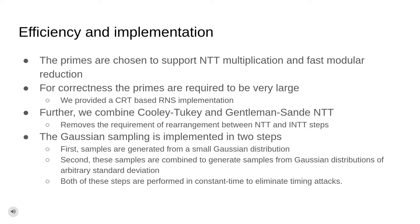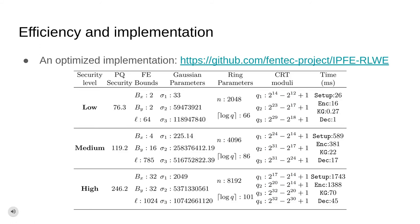To avoid this, we combine the Cooley-Tukey NTT and Gentleman-Sande inverse NTT. For security, we also need samples from very large Gaussian distributions. We achieve this using two steps: first, we generate samples from a Gaussian distribution with small and fixed standard deviation; second, we combine the samples from the small distribution to generate samples from arbitrarily large Gaussian distribution. We perform both of these steps in constant time to remove any adverse effect of timing attacks. We provide parameters for three different levels of post-quantum security and the set of CRT primes for each level. The implementation is available at the above-mentioned GitHub repository.